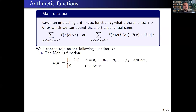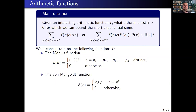We'll mostly concentrate on three arithmetic functions. First is the Möbius function, which records the parity of the number of prime factors when n is squarefree and is zero otherwise. For the Möbius function we always expect cancellation in exponential sums no matter what the polynomial is, though you expect a certain main term when your polynomial has rational coefficients with small denominator.